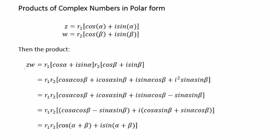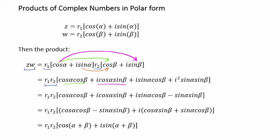To develop the product rule of complex numbers in polar form, we multiply the two polar expressions. The factors R1 and R2 are our moduli, which we multiply together. The remaining polar expressions we can FOIL: cosine alpha times cosine beta gives our first expression; cosine alpha times i sine beta gives our second; i sine alpha times cosine beta gives our third; and i sine alpha times i sine beta gives our fourth expression.